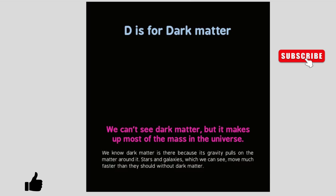D is for dark matter. We can't see dark matter, but it makes up most of the mass in the universe. We know dark matter is there because its gravity pulls on the matter around it. Stars and galaxies, which we can see, move much faster than they should without dark matter.